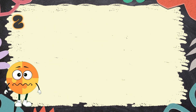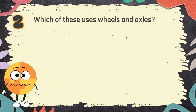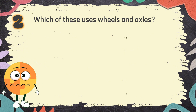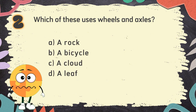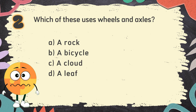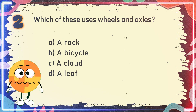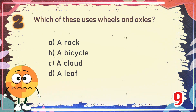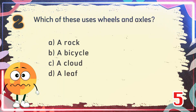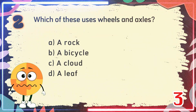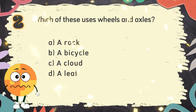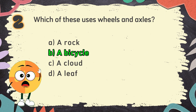Number 2. Which of these uses wheels and axles? The choices are: A. A rock. B. A bicycle. C. A cloud. D. A leaf. The correct answer is B. A bicycle.